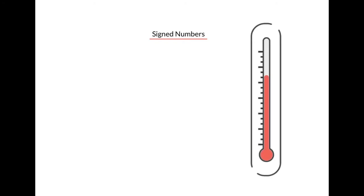Another way to look at sign numbers is to think about temperature and a thermometer. Let's assume 0 degrees is right in the middle of our thermometer. As we go up the scale, the temperature is getting warmer or positive. As we go down the scale, the temperature is getting colder or negative.